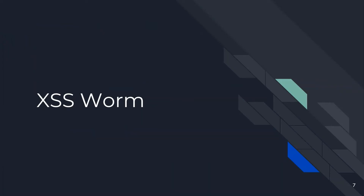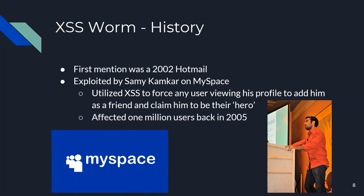For our last attack, we'll cover cross-site scripting worms. A worm is a specific cross-site scripting attack that also affects people who view the victim's profile. The first mention was a cross-site vulnerability in Hotmail back in 2002. However, the most famous use was Sammy Kamkar's worm on MySpace in 2005. His worm made users add him as a friend and claim him to be their hero on their profile, just because the user stumbled upon Sammy's profile. It affected roughly 1 million users at its peak, and Sammy was convicted on a felony charge.